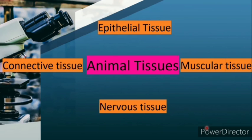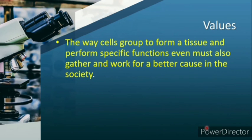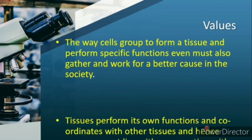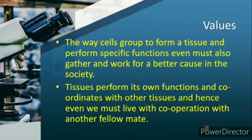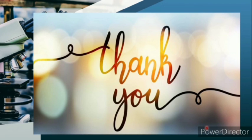In today's class you learned about the definition of tissues and types of tissues - plant and animal tissues. Just as cells group together to form a tissue and perform a specific function, we too must gather and work together for a specific cause. Tissues coordinate with other tissues, and similarly we must live in cooperation and coordination with our fellow beings. That's it for today, students - I hope you enjoyed the class, thank you!